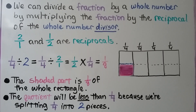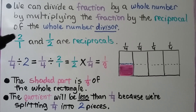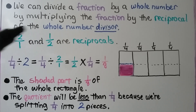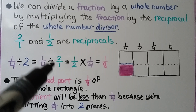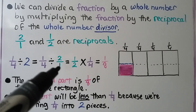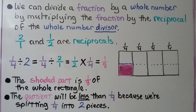We can divide a fraction by a whole number by multiplying the fraction by the reciprocal of the whole number divisor. The first number is the dividend, so the 2 is the divisor. We can write 2 as 2 over 1, and if we flip it upside-down we have 1 half — these are reciprocals. So 1 fourth divided by 2 equals 1 fourth times 1 half, which gives us 1 eighth.